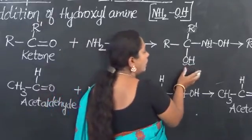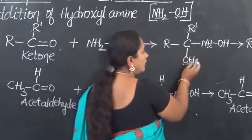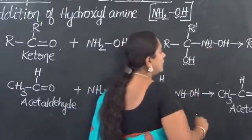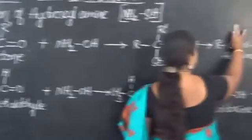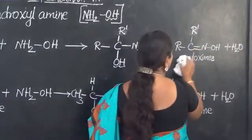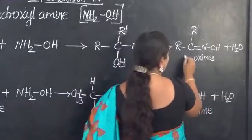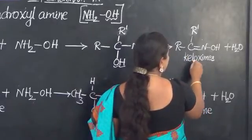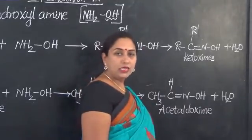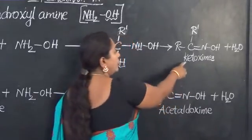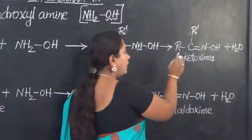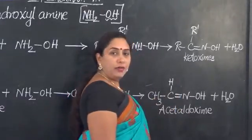This addition compound will then eliminate a molecule of water. OH from the carbon and H with nitrogen go out as water. Therefore, the product obtained in this case is called a ketoxime. Earlier, the products were called aldoximes because the starting material was an aldehyde; now they are referred to as ketoximes because the product is obtained from a ketone.